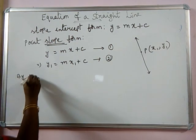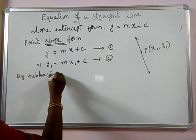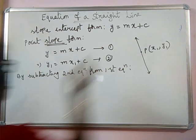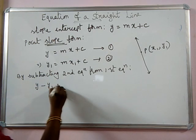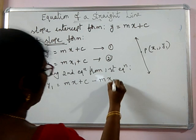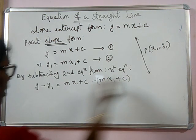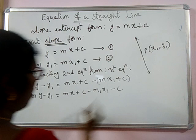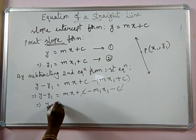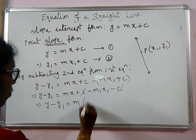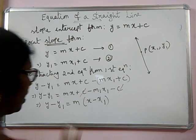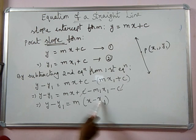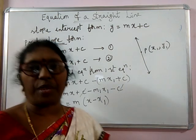By subtracting the second equation from the first equation, we get y − y₁ = mx + c − (mx₁ + c). The c terms cancel, giving y − y₁ = mx − mx₁. Taking m common, we get y − y₁ = m(x − x₁). This is the point-slope form of finding the equation of a line, where m is the slope and (x₁, y₁) are the coordinates of the point through which the line passes.